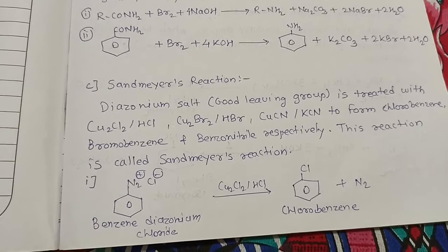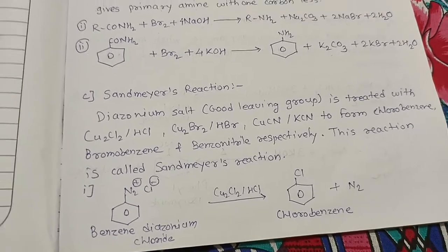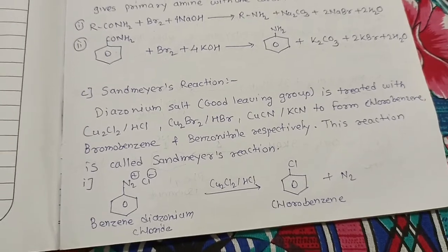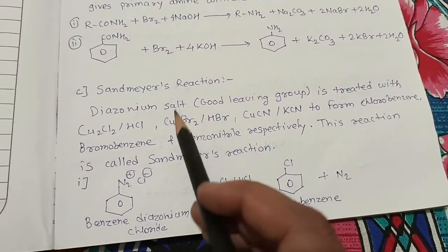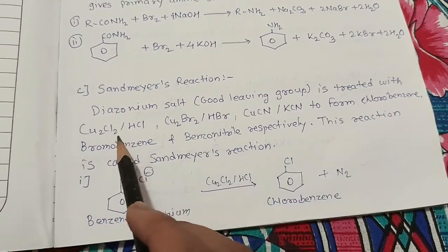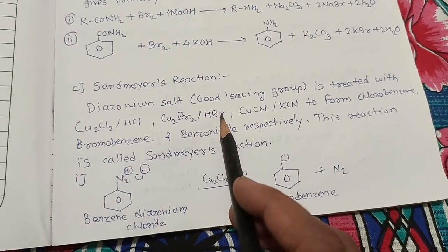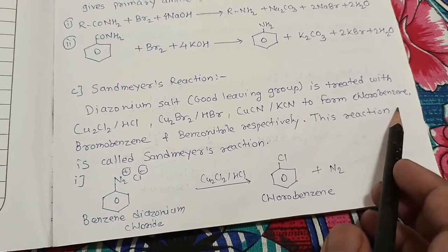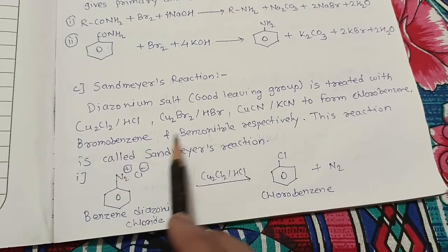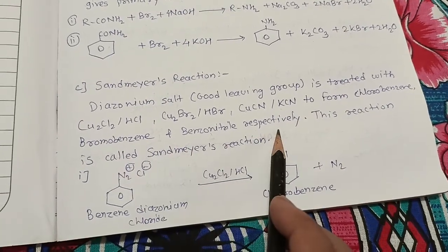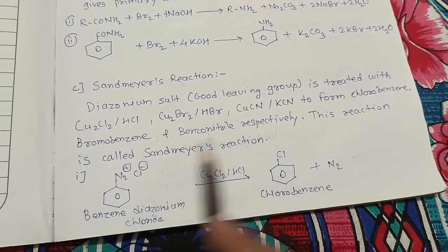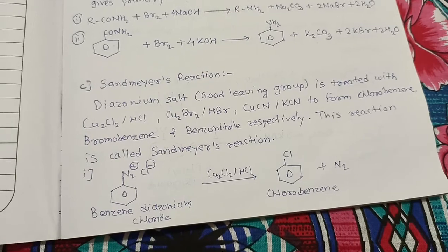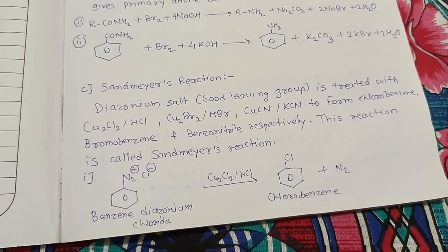The next reaction is Sandmeyer's reaction. The diazonium salt is known as a good leaving group. When diazonium salt is treated with copper(I) chloride in HCl, copper(I) bromide in HBr, or copper cyanide in KCN, it forms chlorobenzene, bromobenzene, and benzonitrile respectively. All these reactions are known as Sandmeyer's reaction.